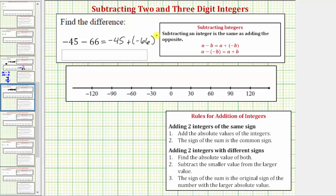Now we'll use the formal rules for adding integers to find this sum and also show this sum on the number line. Because we have a negative plus a negative, we'll use the rules for adding two integers with the same sign.